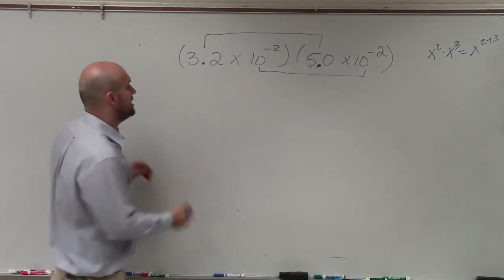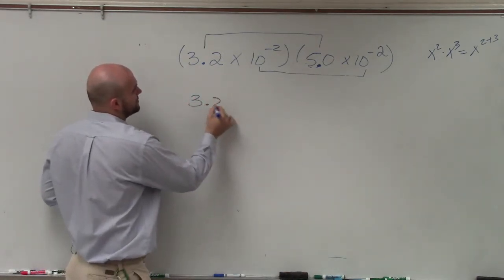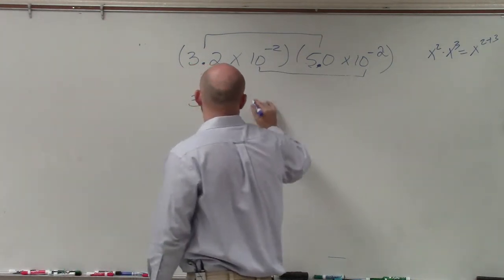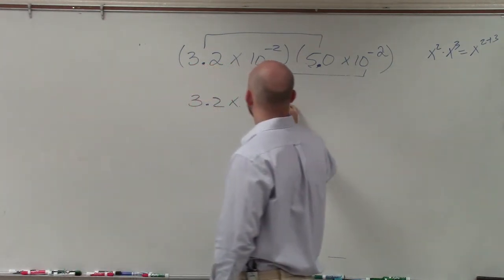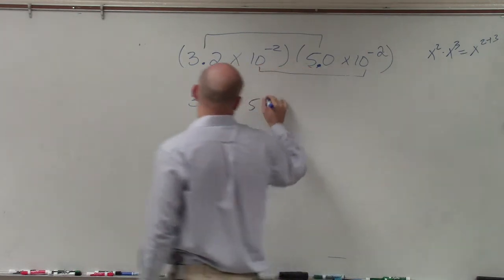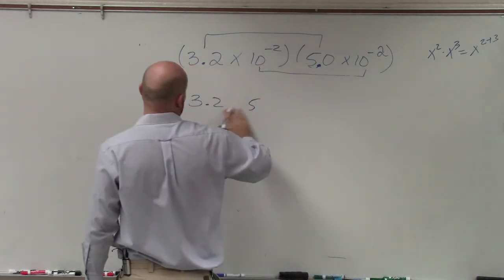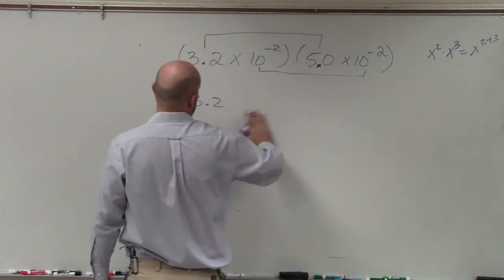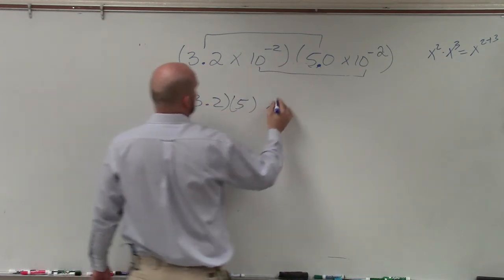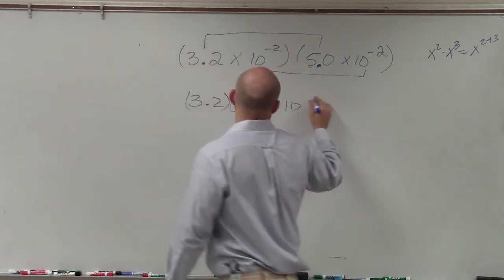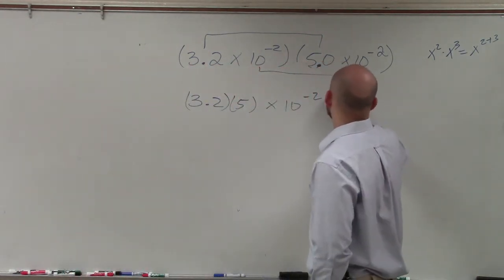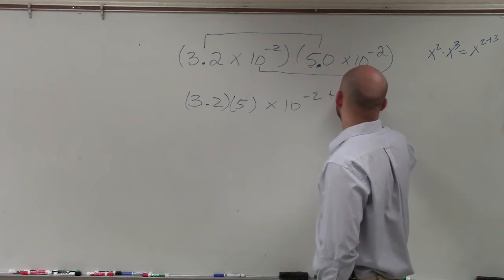So now I'm going to do 3.2 times 5.0 times 10 to the negative second plus negative second.